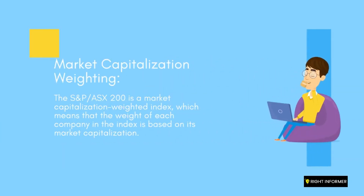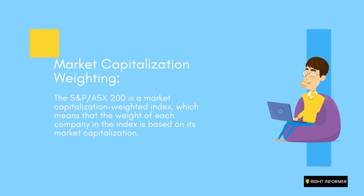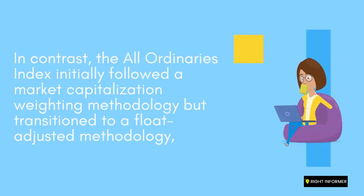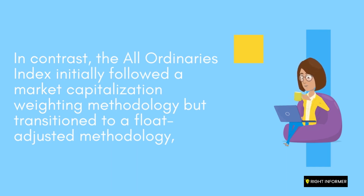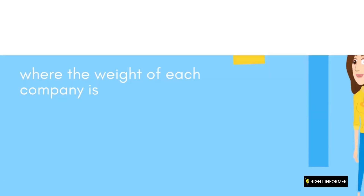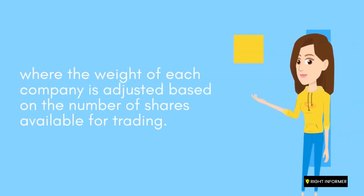Market Capitalization Weighting: The S&P/ASX 200 is a market capitalization weighted index, which means that the weight of each company in the index is based on its market capitalization. In contrast, the All Ordinaries Index initially followed a market capitalization weighting methodology but transitioned to a float-adjusted methodology, where the weight of each company is adjusted based on the number of shares available for trading.